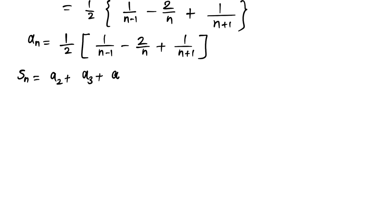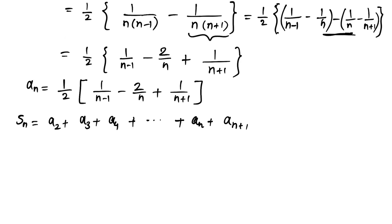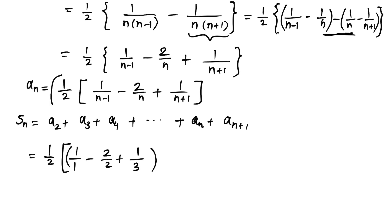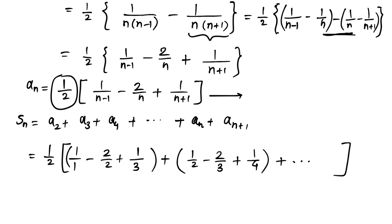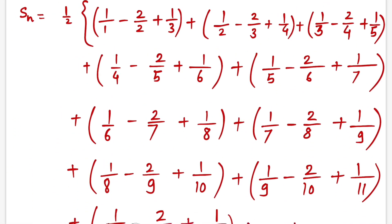Now Sₙ = a₂ + a₃ + a₄ + ... + aₙ + aₙ₊₁. Let's write out a few terms. Taking 1/2 common from all terms: when n=2, we get 1/1 - 2/2 + 1/3; when n=3, we get 1/2 - 2/3 + 1/4; and so on. The denominators in each position form sequences 1,2,3,..., then 2,3,4,..., then 3,4,5,...